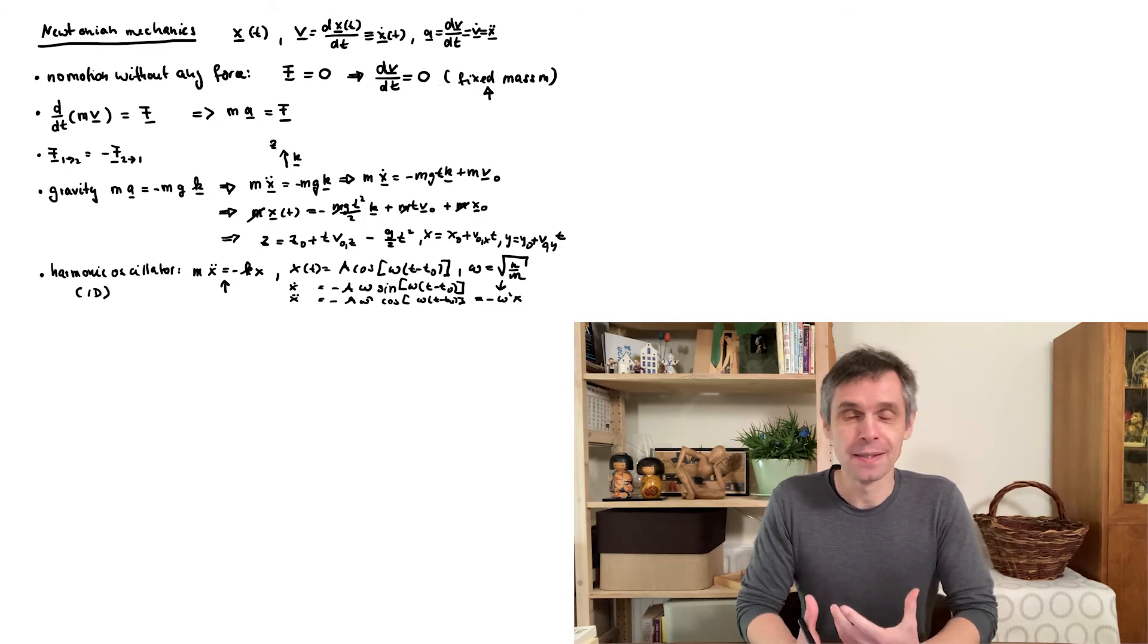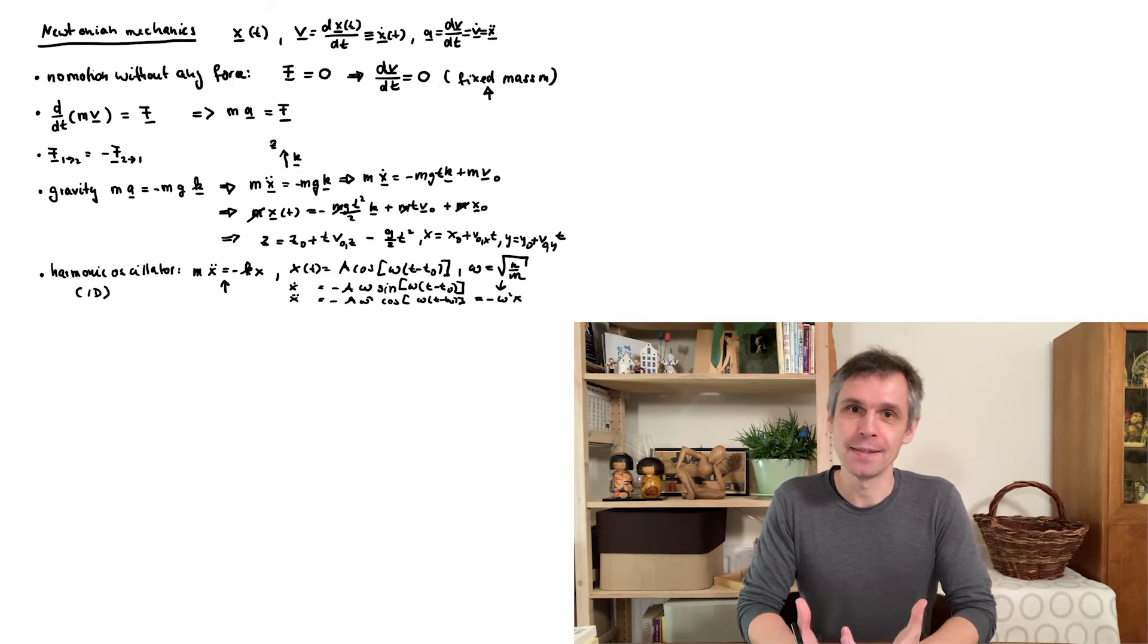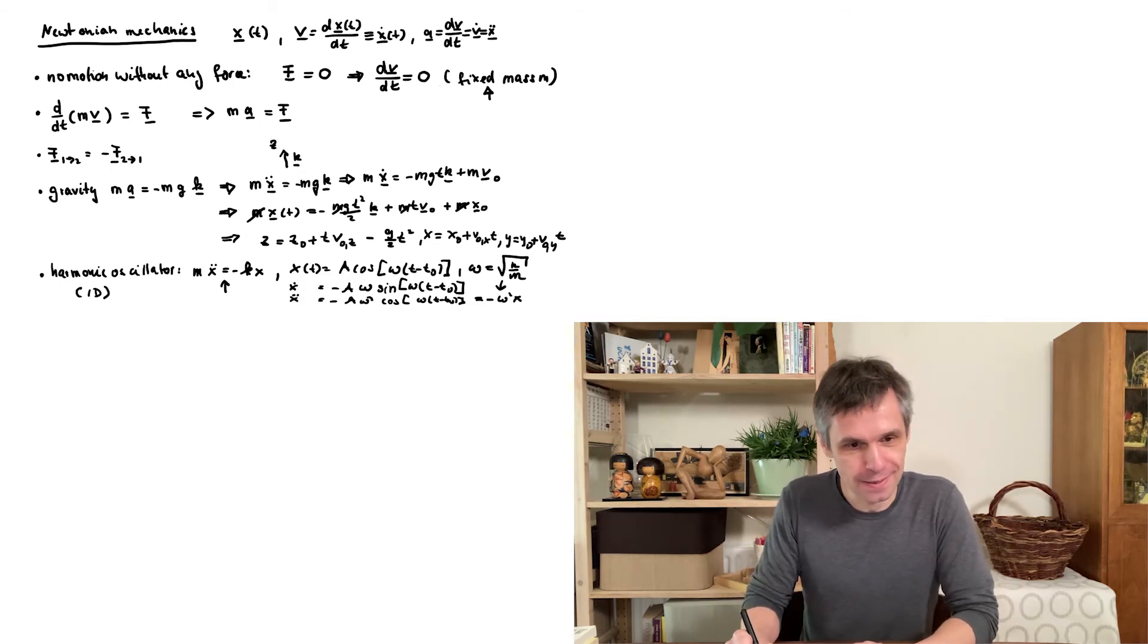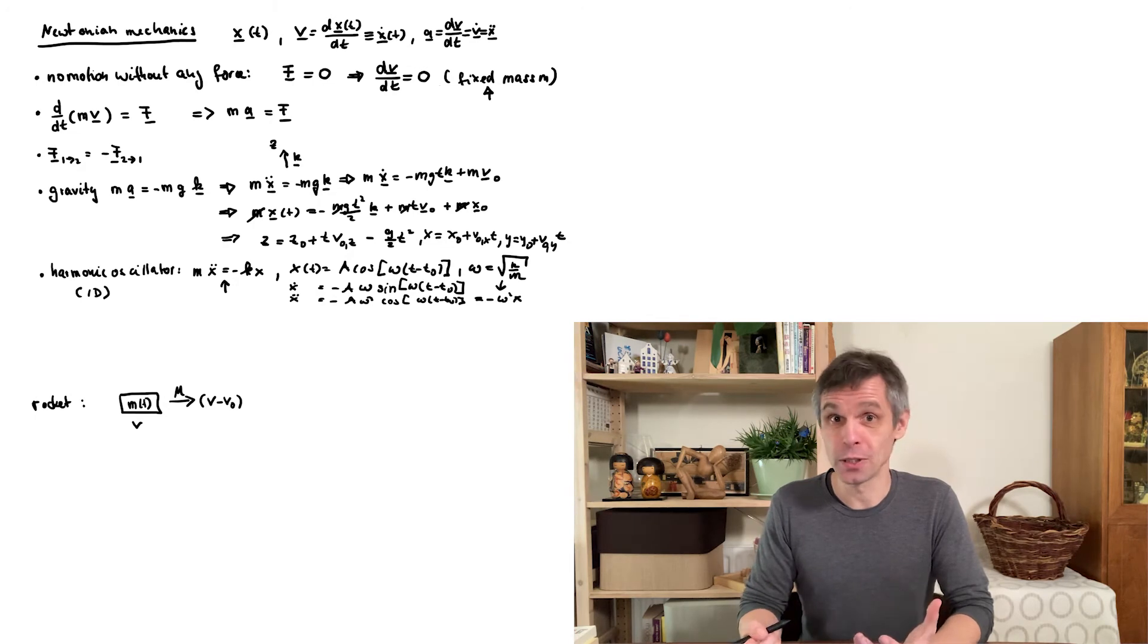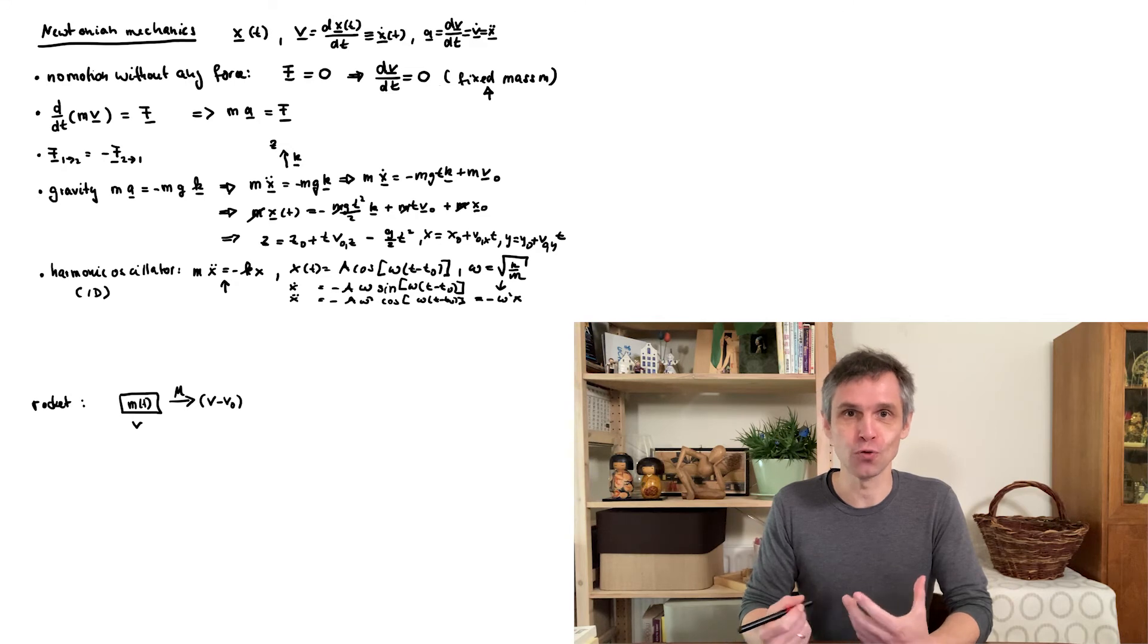Now Newtonian mechanics can become quite complicated when we look at slightly more general contexts. For instance, in the case of a rocket, we have an object that is losing mass at a certain rate mu. And if the rocket is moving at a velocity v, then the mass which is being expelled is moving at a relative velocity v0. Now this is clearly more complicated than the situation of a particle with a fixed mass. But it can be solved by introducing the notion of momentum and the idea that momentum is conserved.